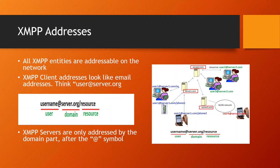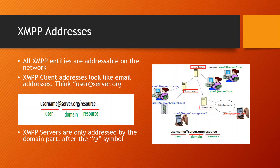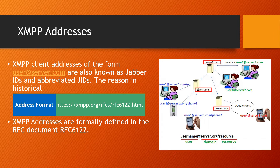Now we've looked at client addresses — how do server addresses look? The server address is the domain part, the part at the right of the at-sign in the address. So you'll see a user say their XMPP server is hosted.example.com or server7.com. The key takeaway: XMPP clients have addresses, XMPP servers have addresses. A client address looks like an email — user at server.com — and servers have addresses that are the domain part. You will also see XMPP addresses called Jabber IDs, abbreviated JIDs. A JID is just an XMPP address, defined in RFC 6122.